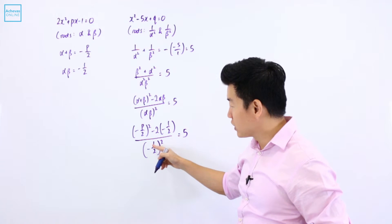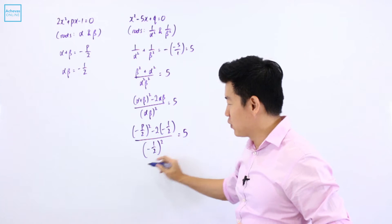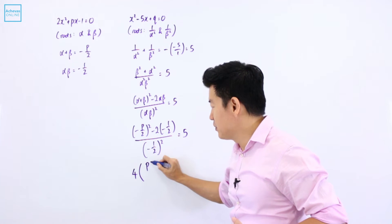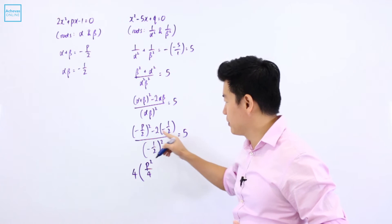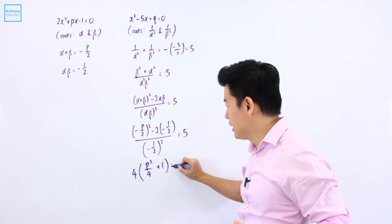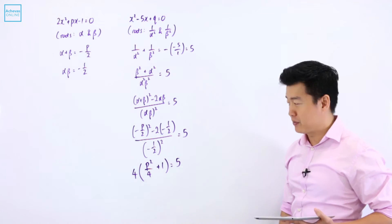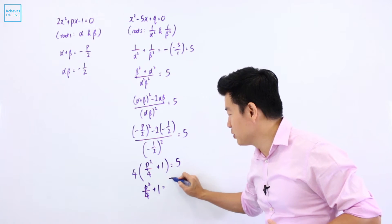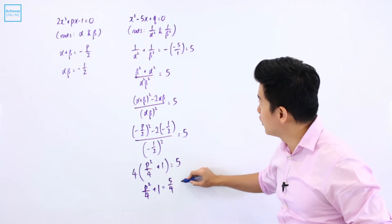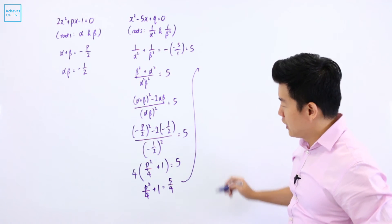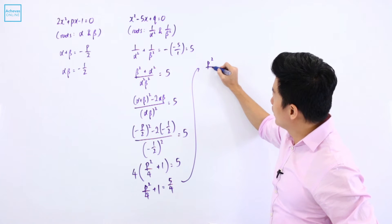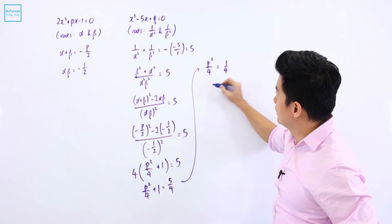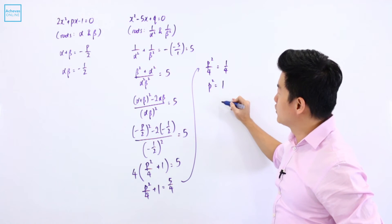This is 1 quarter, so 1 divided by 1 quarter is 4. And this is P squared divided by 4, and this is plus 1. This is equal to 5. So P squared over 4 plus 1 is going to be equal to 5 over 4, which means that P squared over 4 is going to be equal to 1 quarter, and P squared is going to be equal to 1.